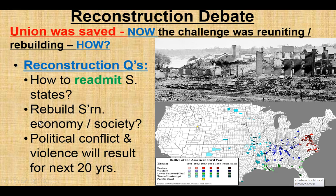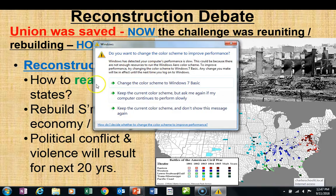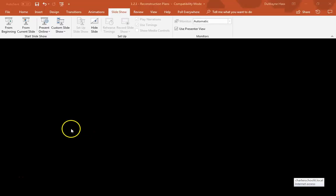The Reconstruction debate begins with some very simple questions. We've got the Union saved, the rebellion is put down. Now the challenge is reuniting the country, rebuilding the country. How do we do that? How do Southern states get readmitted? How are they rebuilt economically, politically, socially? Should we remake them? This fight is going to go on for a good 20 years, and it is going to be a very violent time. It's also known somewhat as America's Second Civil War.